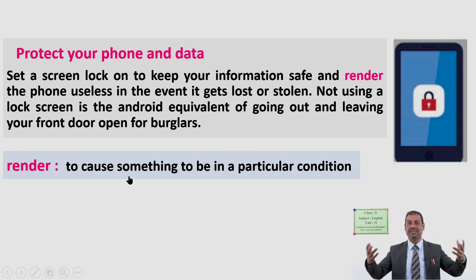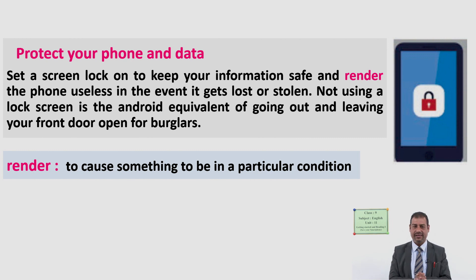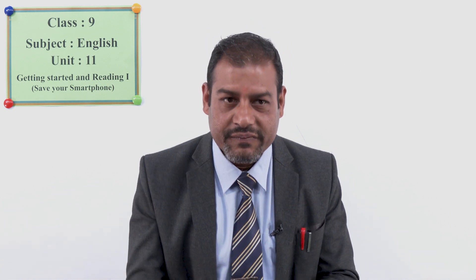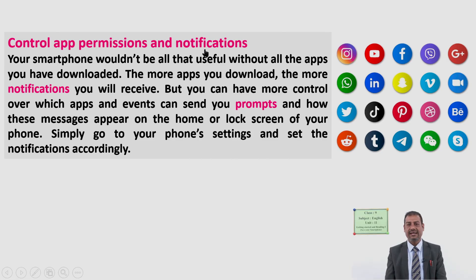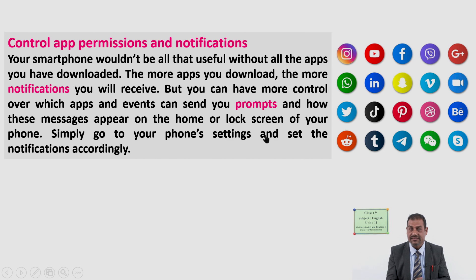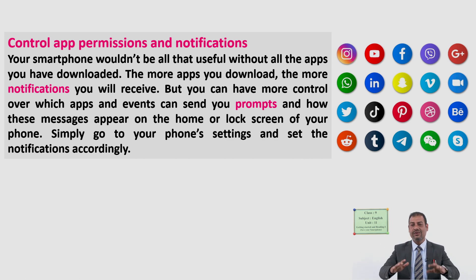After this, we have another tip: control app permissions and notifications. You can see examples of apps — apps means applications on our mobile phone. For example, Facebook, TikTok, Twitter, YouTube — these are all applications. If we download and install them on our mobile phone, then only we can use them.